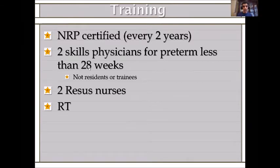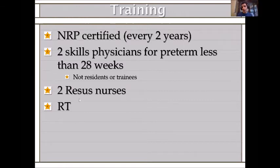For babies less than 28 weeks, there should be two skilled, confident physicians — although well-trained senior residents may attend. We usually have two nurses — resource nurses — and one respiratory therapist. If no respiratory therapist is available, three nurses can be used: one for documentation, one for assistance, and one to handle the respiratory support devices.